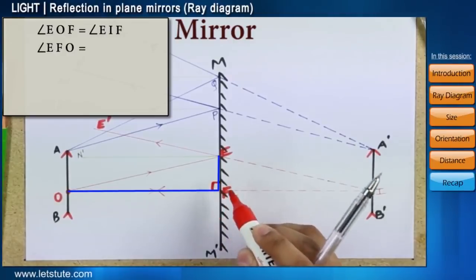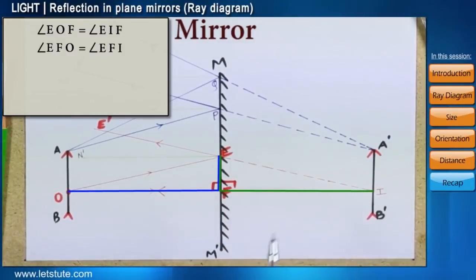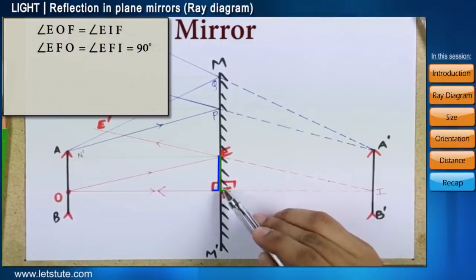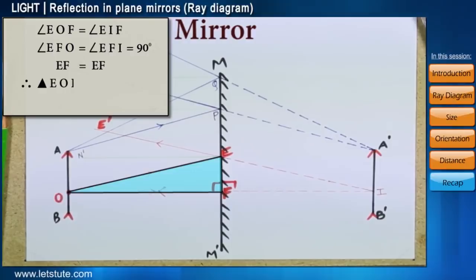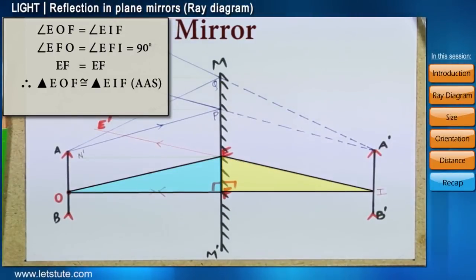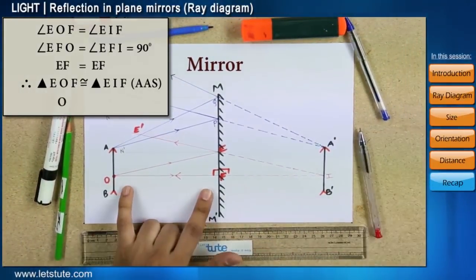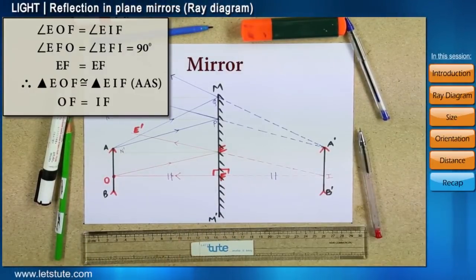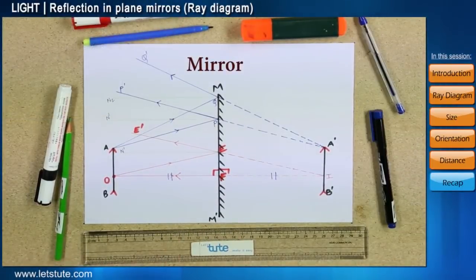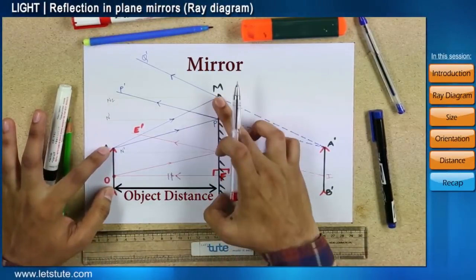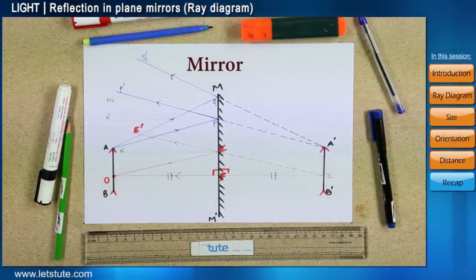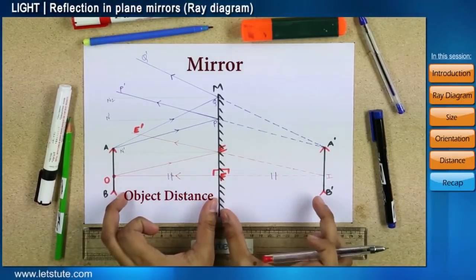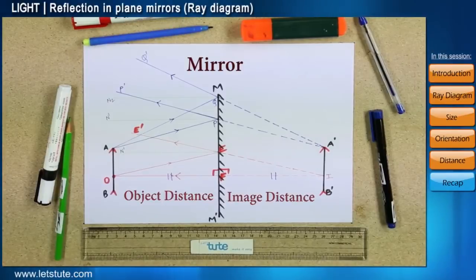Now let's consider the triangles EOF and EIF. Angle EFO is equal to angle EFI as both are 90 degrees. Therefore, EF is the common side. Therefore, triangles EOF and EIF are congruent. So length OF is equal to length IF. But in the figure, OF is the distance of the object from the mirror and IF is the distance of the image from the mirror. So from this, we have just proved that the object to mirror distance is always equal to the image to mirror distance in case of a plane mirror.